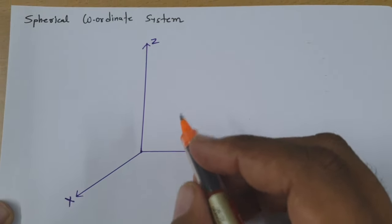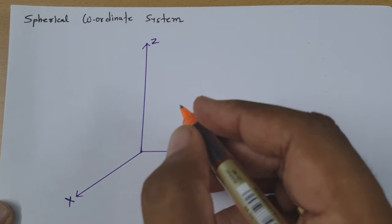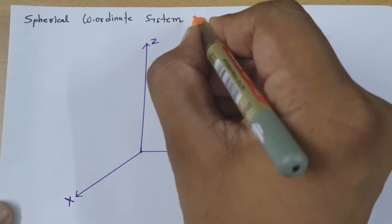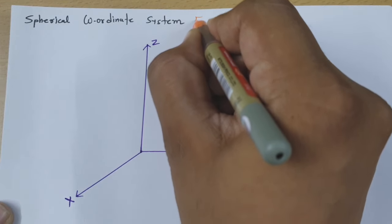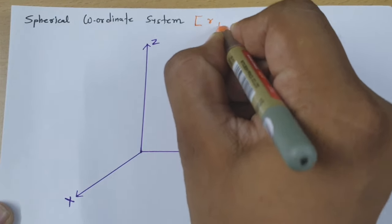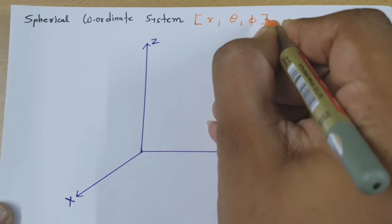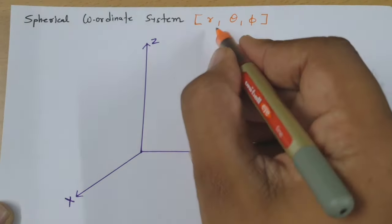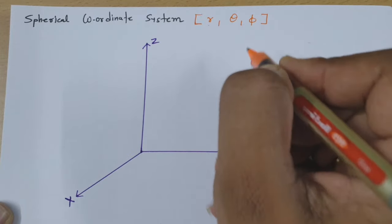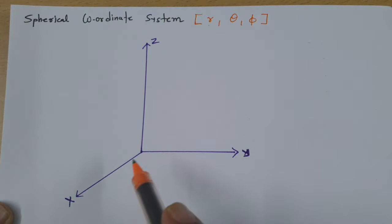First of all we need to understand how the Spherical Coordinate System works. The Spherical Coordinate System is represented as per R, Theta, and Phi. We need to understand what is the meaning of R, Theta, and Phi and how it exists in 3-dimensional coordinates.